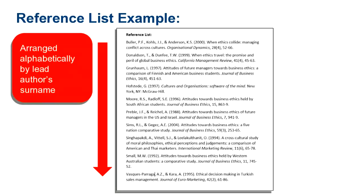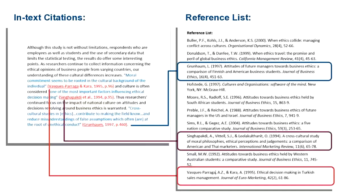Here we have a reference list example. You can see the full details of the sources cited in text are included in the list, and it is arranged alphabetically by author's surnames. You can see each of the in-text citations have a full entry in the reference list. The author's names match, so that's why it's important to list them alphabetically in the reference list.